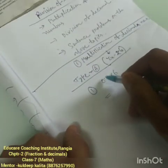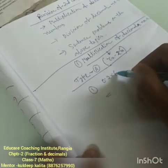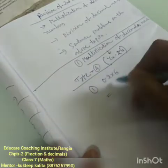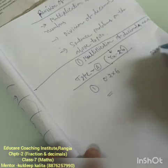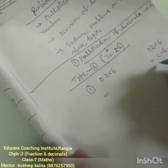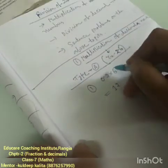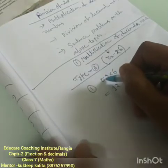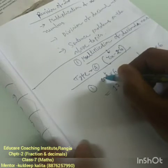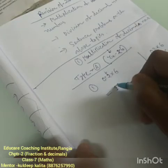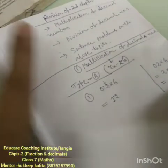If you see, it is 0.2 into 6. To multiply, let us forget about the decimal point. 0.2 means 2, and 2 into 6 is 12. So 12 is the answer, but the point is that the decimal sits before 1 digit. Since it is sitting before 1 digit, we will put the decimal before 1 digit in the answer. That is the point — clear?